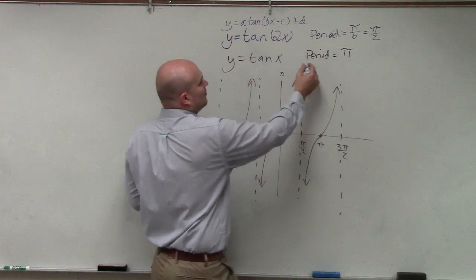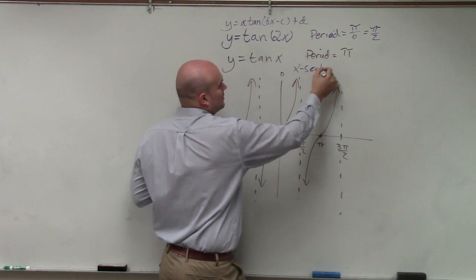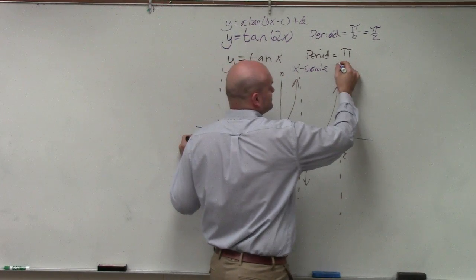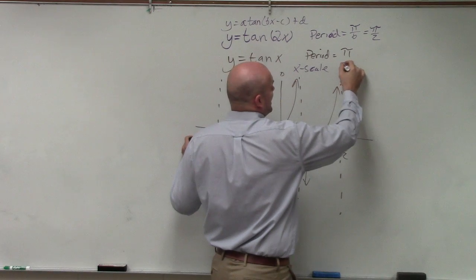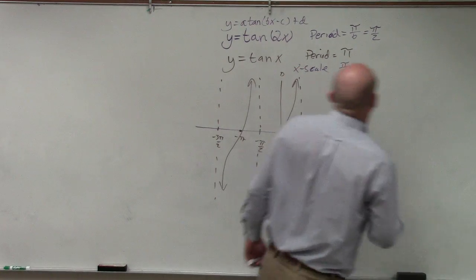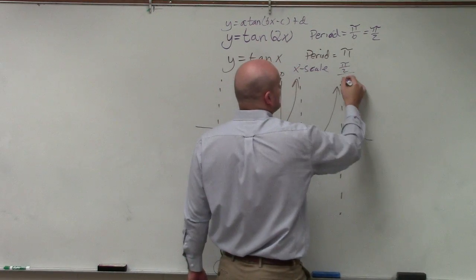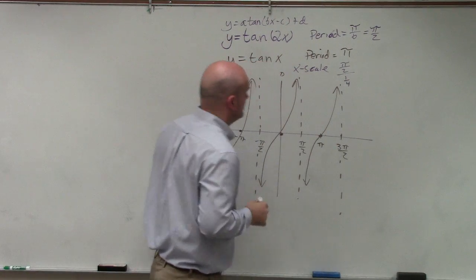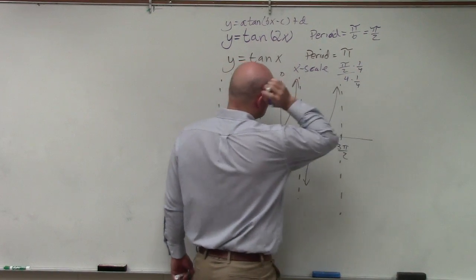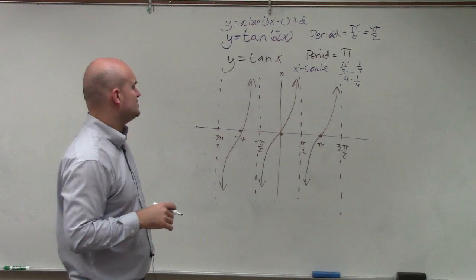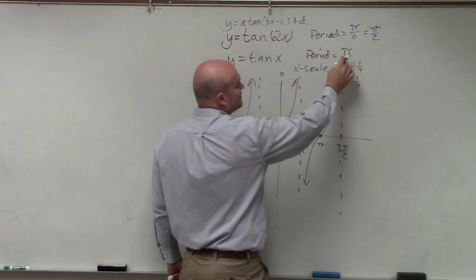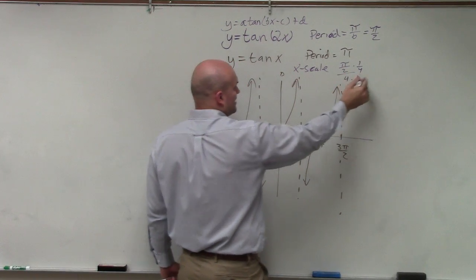Well, what about the x scale then? Remember the x scale previously was always still going to be pi halves. Now my x scale is going to be pi halves divided by 4. Multiply by your reciprocal pi. Where did I get 2? Why did I get pi halves? Your period is pi halves, and that's going to be divided by 4, which equals pi over 8.